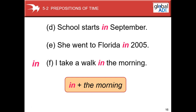We use 'in' for parts of the day: in the morning, in the afternoon, and in the evening. However, for night we say 'at night' — not 'in the night'. So the parts of the day are morning, afternoon, and evening — all use 'in'.